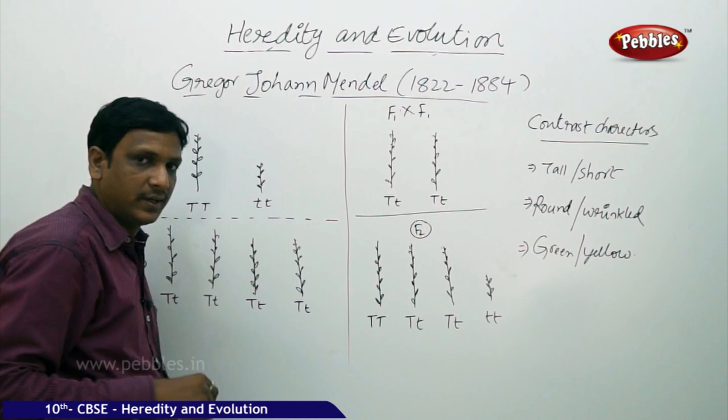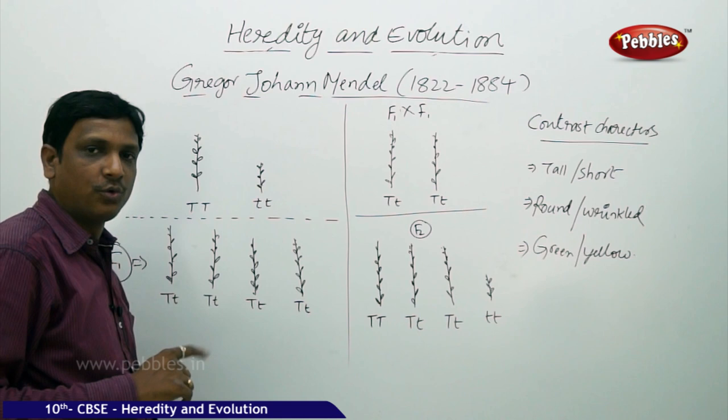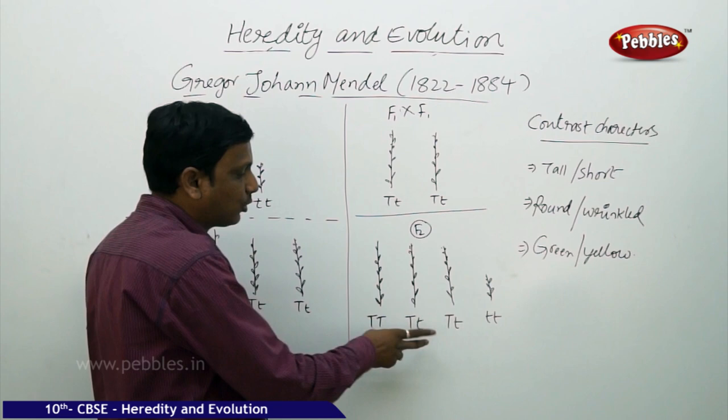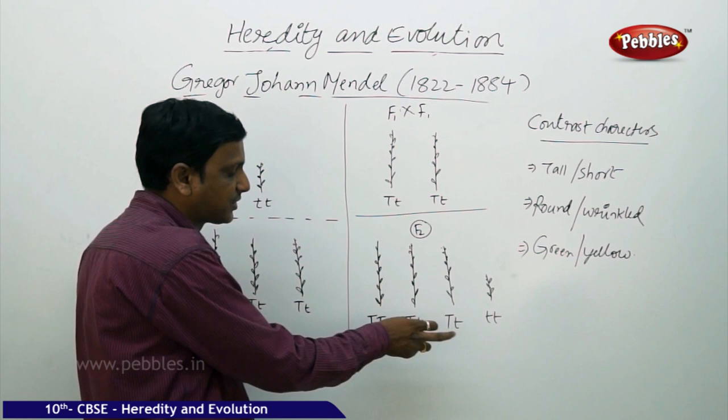Out of this, we got one-fourth short and three-fourths tall. Three-fourth plants are tall, one-fourth is short. Out of four, one is short. The short plant has both genes as small t, small t — both characters express shortness, which is why it is short. In the other case, 50% — two out of four — have one capital T and one small t, meaning they carry one dominant and one recessive character. The shortness gene is also present.